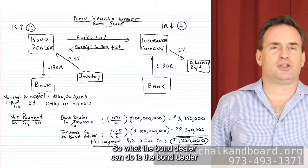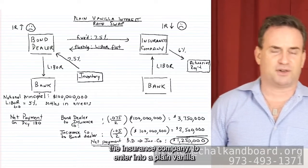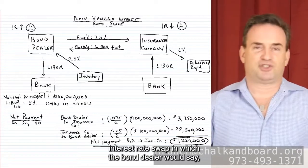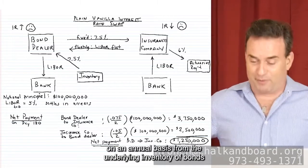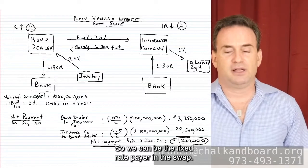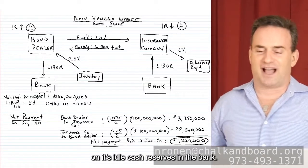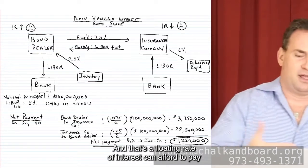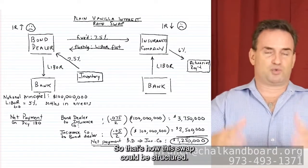So what the bond dealer can do is propose to its client, the insurance company, a plain vanilla interest rate swap. The bond dealer is getting 7.5% fixed annually from the underlying inventory of bonds, so they can be the fixed rate payer in the swap. The insurance company is receiving LIBOR on its idle cash reserves — a floating rate — and can afford to pay LIBOR to the bond dealer. That's how this swap could be structured.